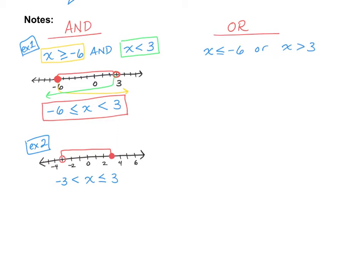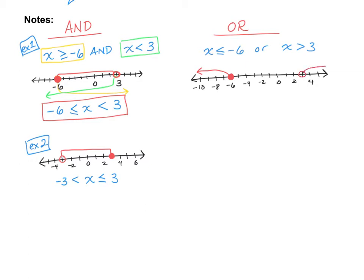Let's think about the OR side. We have x is less than or equal to negative 6, or x is greater than positive 3. Let's put that on a number line. x is less than or equal to negative 6 would be a closed circle at negative 6 heading down. And then x is greater than 3 would be an open circle at 3 heading up.